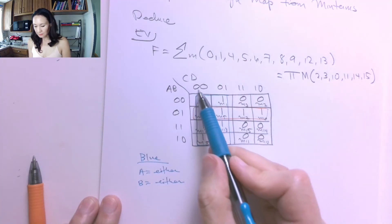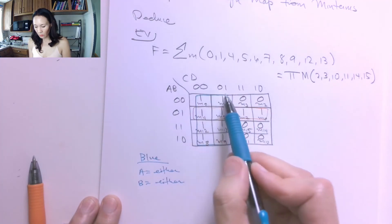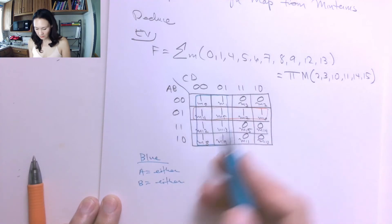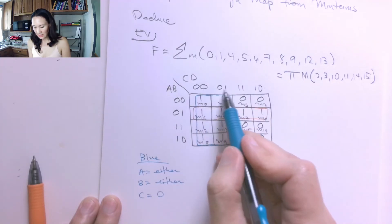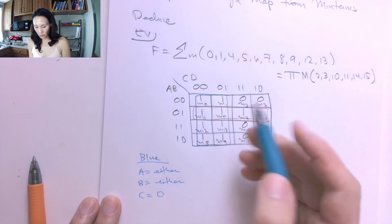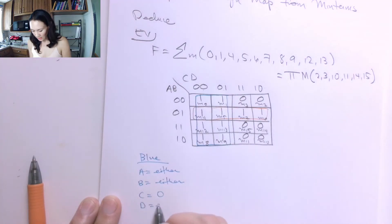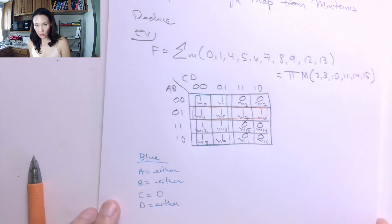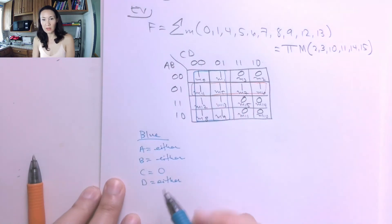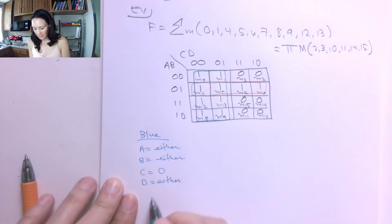How about C? Well, C is 0 between these two columns. So C must be 0. And D can be either 0 or 1, and we'll have 1s in our blue group. So D is also either. So this is a great reduction because the only literal that matters here is C, and we need C to be 0, so we complement it.